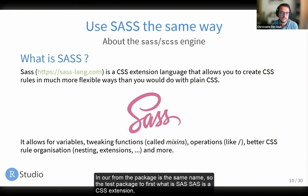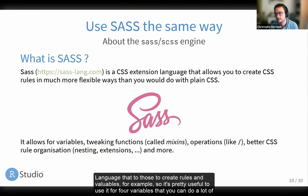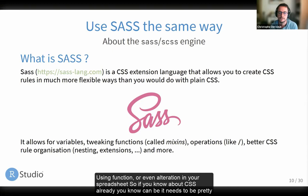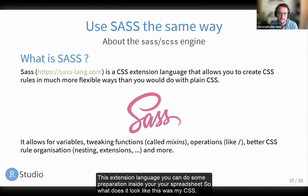So what is Sass? Sass is a CSS extension language that allows you to create rules and variables. It's useful for variables, but you can do many other things — functions, operations — in your stylesheet. If you know CSS, it can be pretty simple — just key-value associations. But with this extension language, you can do operations inside your stylesheet. Here is the equivalent SCSS file that produces the same CSS as before.